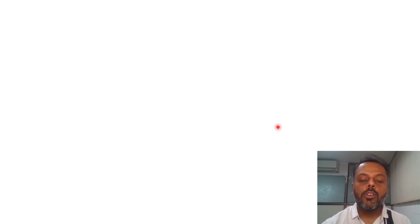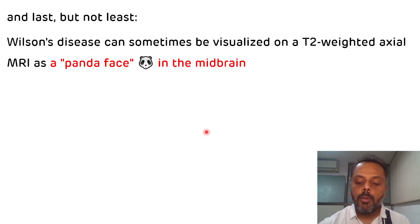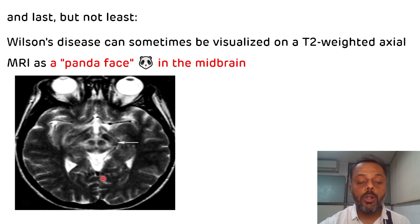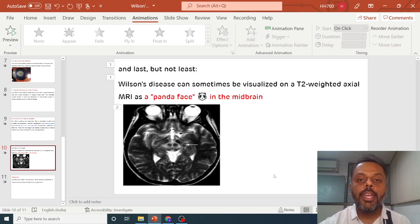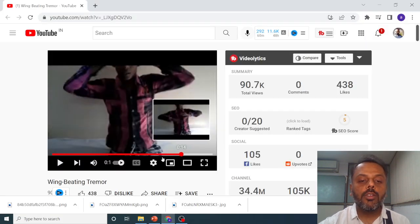Apart from the other findings, in Wilson's disease there is one particular sign seen on MRI — the panda face sign, seen on T2-weighted axial MRI in the midbrain. This can also be asked as a spotting question in various entrance examinations.